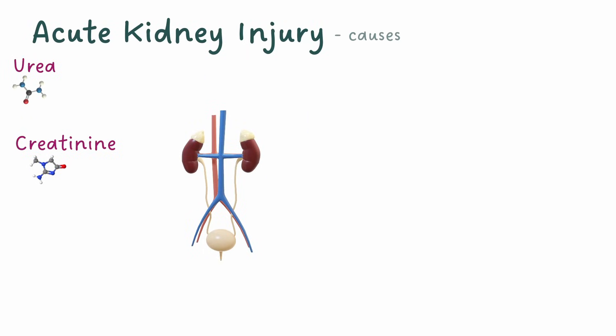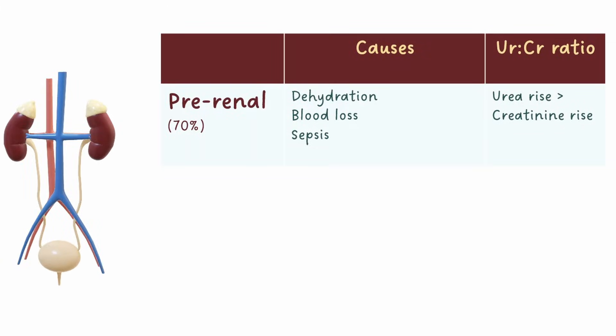Causes of AKI can be split into three categories. Prerenal refers to reduced blood supply to the kidneys. This could be due to dehydration — for example in burns or reduced oral intake — blood loss, or sepsis. In prerenal cases, we generally see a rise in urea that is proportionally greater than the rise in creatinine.